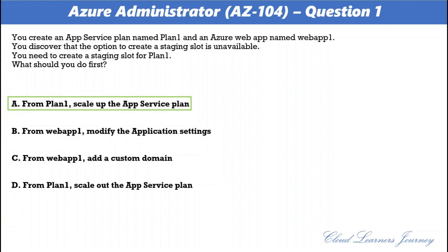The app must be running in the Standard, Premium, or Isolated tier in order to enable multiple deployment slots. If the app is not already in the Standard, Premium, or Isolated tier, you receive a message that indicates the supported tier for enabling staged publishing. At this point, you have the option to select upgrade.